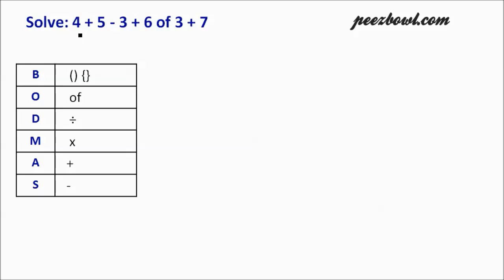Let us solve the following example. In this example, we will go through each operation like addition, subtraction, addition, of, and plus addition. We will go through each of these operations to understand its rank or order in the BODMAS table. This is the BODMAS table.